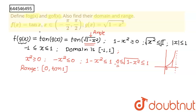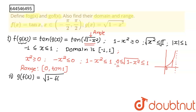Now I am going to do the same process for g(f(x)). For g(f(x)), I am going to substitute f(x) into g(x). So g(f(x)) = √(1 - (f(x))²) = √(1 - tan²x).